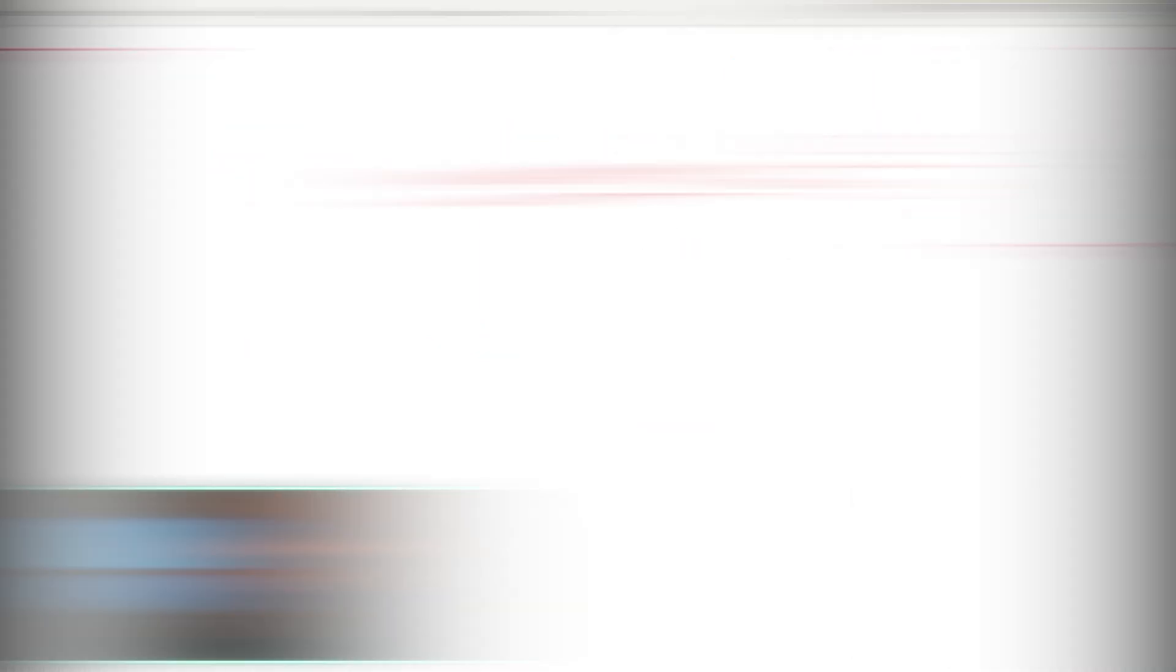Now let's add something new. We also have axial stiffness, and this can be derived at its simplest form with the equation as follows: AE over L. Again, A is the area, the cross-sectional area of your member, E is your modulus of elasticity of the material, and L is the length of your member.